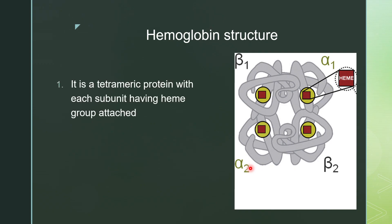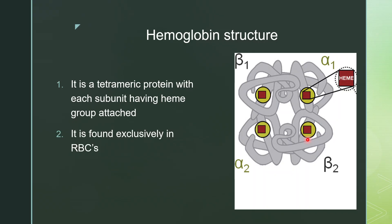First, hemoglobin. If you look at the structure of hemoglobin, it's a tetrameric protein, meaning it consists of four polypeptides — two alpha polypeptides and two beta polypeptides. Each polypeptide has a heme group attached at the center, so hemoglobin has four polypeptides and four heme groups. It is found exclusively in red blood cells.